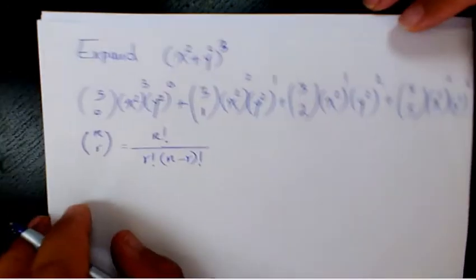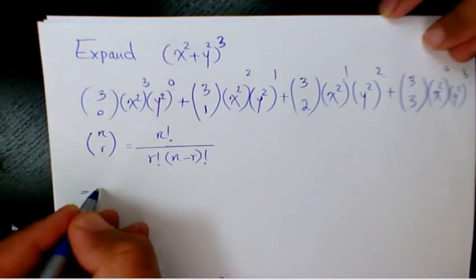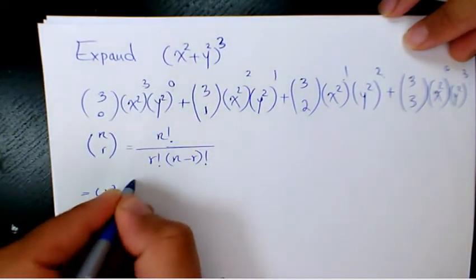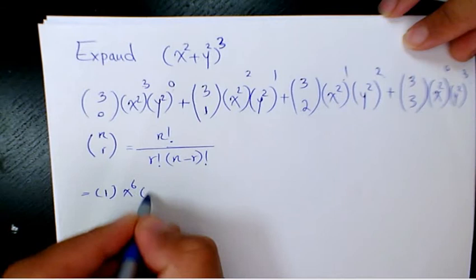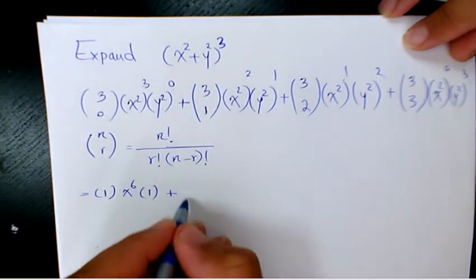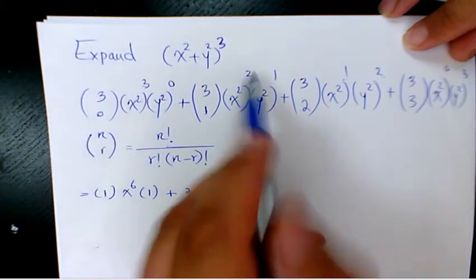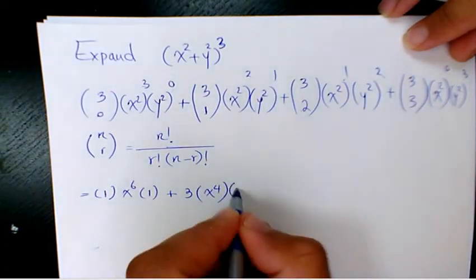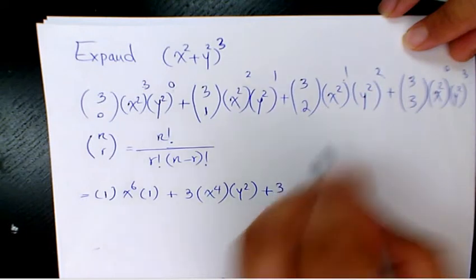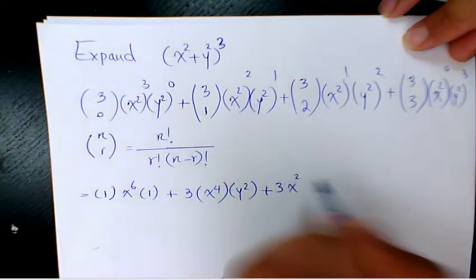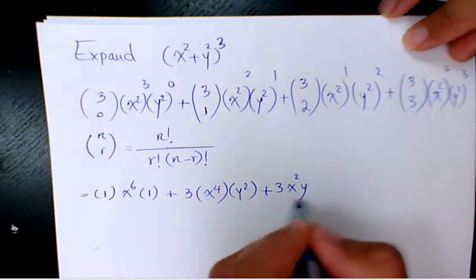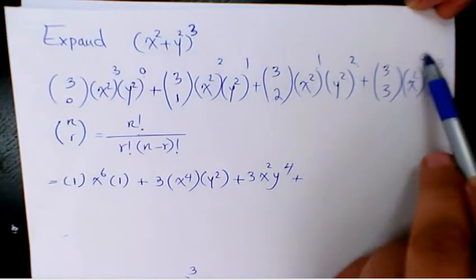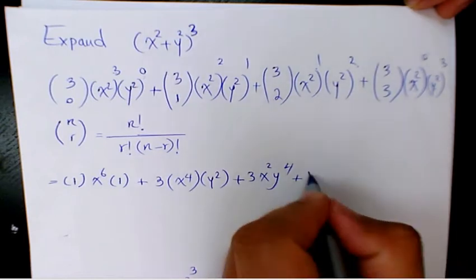So the coefficients are 1, 3, 3, 1. The first term is 1 · (x²)³ = x⁶, and (y²)⁰ = 1. The second term is 3 · (x²)² = x⁴, and (y²)¹ = y². The third term is 3 · (x²)¹ = x², and (y²)² = y⁴. The last term is 1 · (x²)⁰ = 1, and (y²)³ = y⁶.